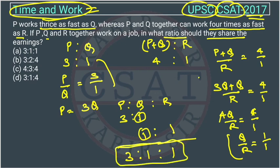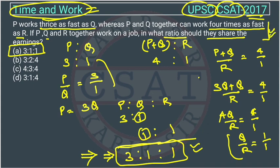So this is the answer. Their earning will be according to their efficiency. This is the ratio of their efficiency and this will also be the ratio of their earning or share in earning. So this is the answer — it was a very easy question, you just needed to understand the language.